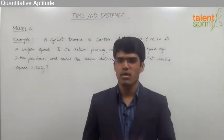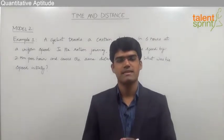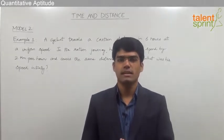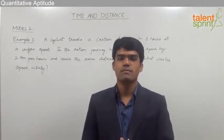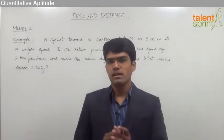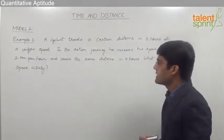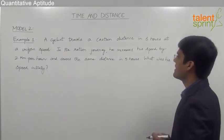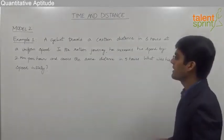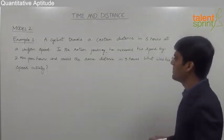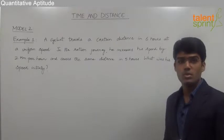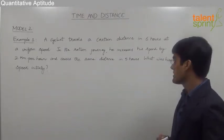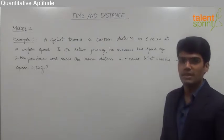Let us now discuss the second model from time and distance, where the distance traveled in two different cases is equal but the speeds and the time are varying. Let us look at the first example. A cyclist travels a certain distance in six hours at a uniform speed. In the return journey, he increases his speed by two kilometers per hour and covers the same distance in five hours. What was his speed initially?